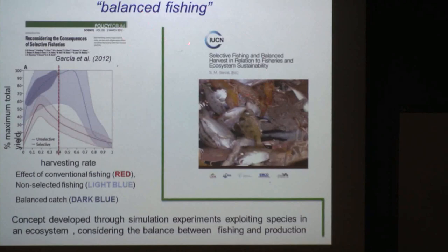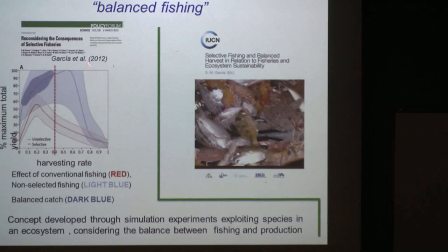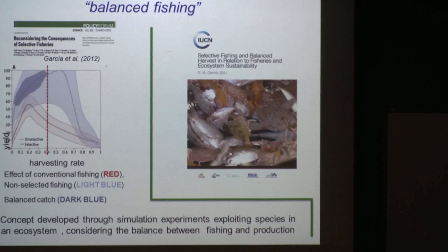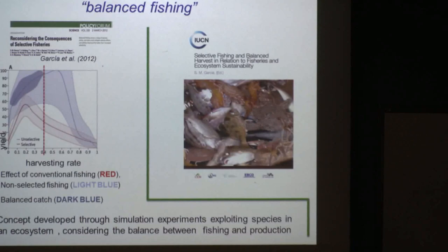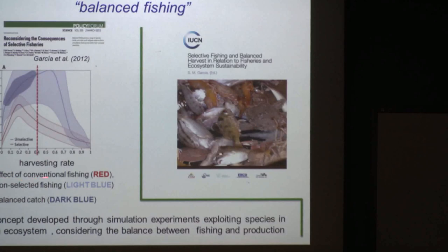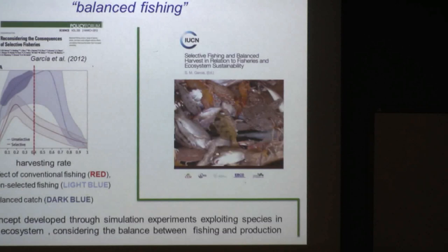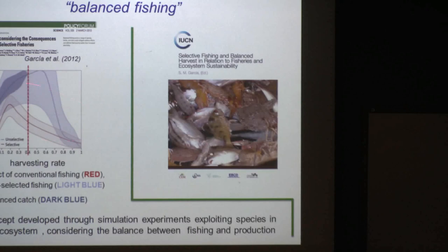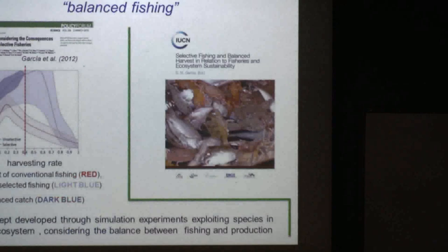Now, for the balanced fishing concept — some years ago, Garcia and colleagues made experiments running ECOPATH models and tried to equalize production and extraction of biomass. They found that in a global sense there are three levels: conventional fishing in red — where the biomass decreases — non-selective fishing, and balanced catch. They ran approximately 22 models, and in all cases, the summary recommended applying a harvest rate of 40% on the world ecosystem.